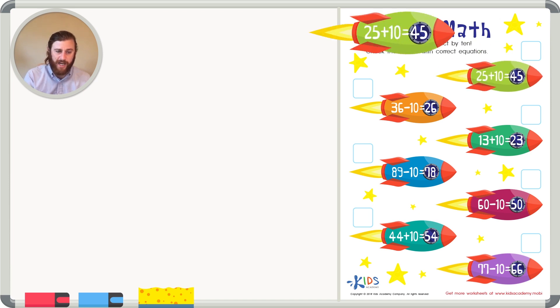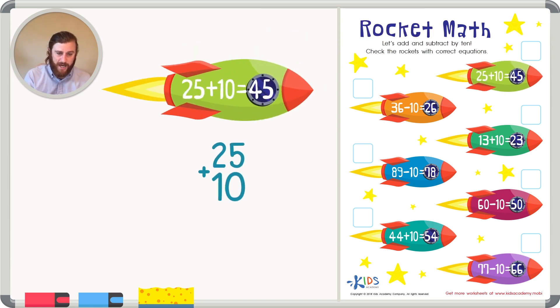Okay, so let's look at this first rocket. 25 plus 10. And this rocket has a sum of 45. So let's see if that's correct. Well 25 plus 10, remember anything plus 0 is just the same number. So 5 plus 0 is 5.